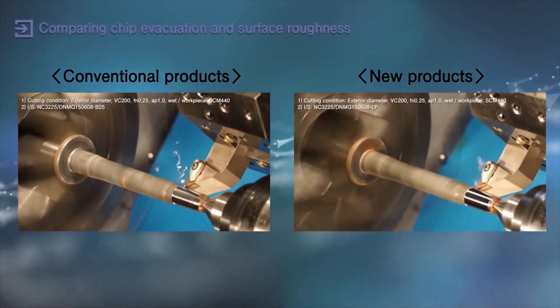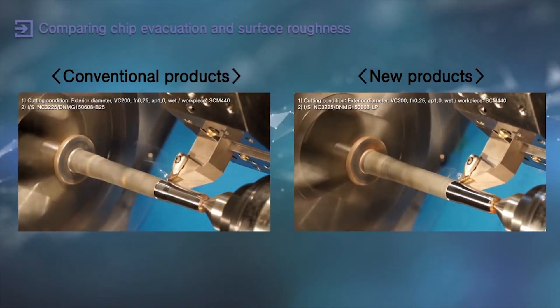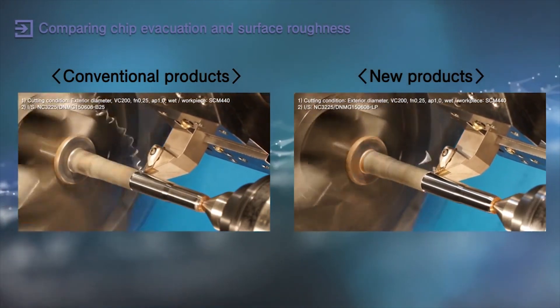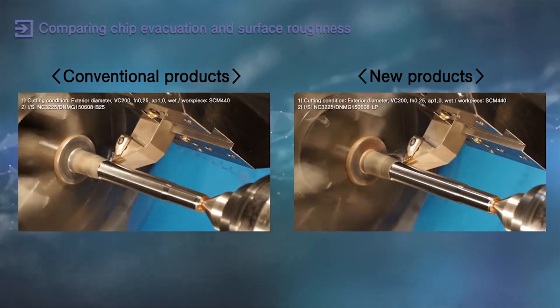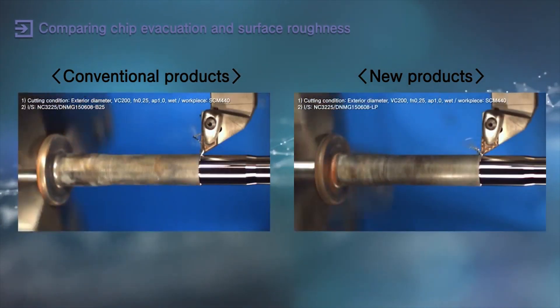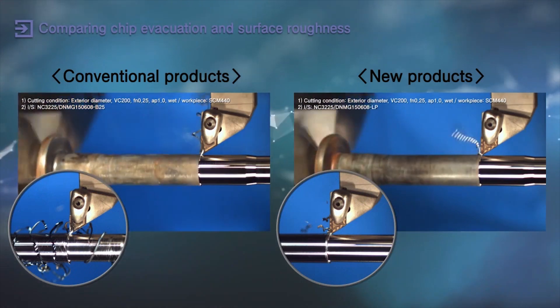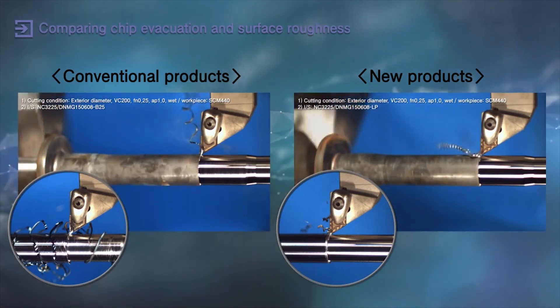The new LP chip breaker with NC3215 and NC3225 turning inserts for steel is guaranteed to continually deliver efficient productivity with excellent chip disposing ease.